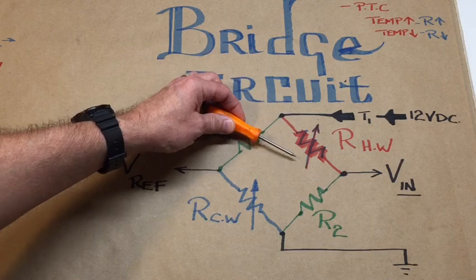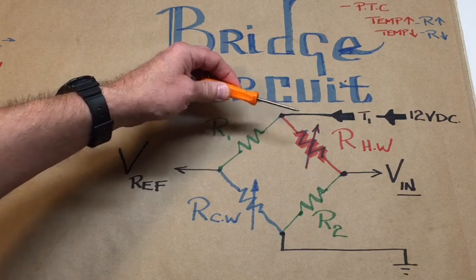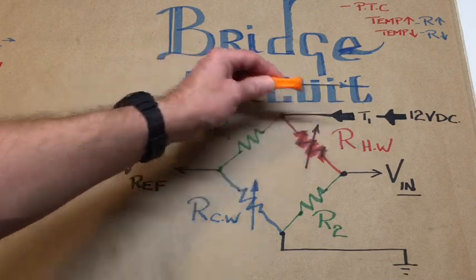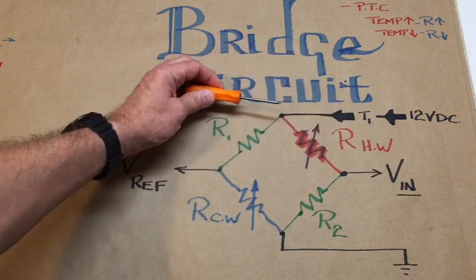By maintaining that temperature, that's what gives the relationship between the flow and the voltage output of the mass air flow sensor itself.